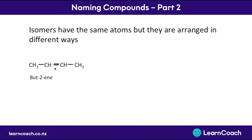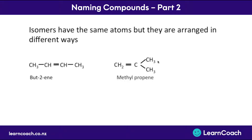We learned this in the last video, but what happens if we take away one of these carbons and attach it in a different place? Here we have exactly the same number of atoms and we have a double bond, but they're arranged in a different way completely. Here we have the longest chain of three carbons, which is 'prope', and it's still '-ene', but we also have this methyl group attached.